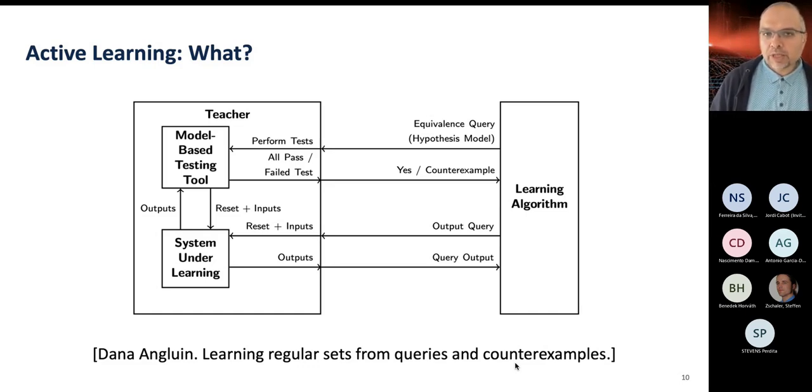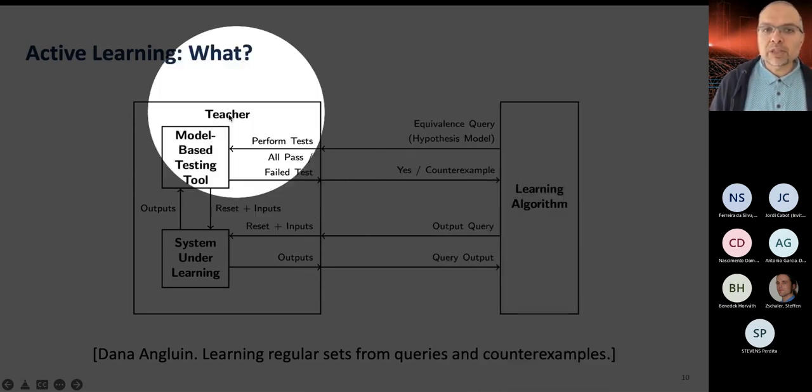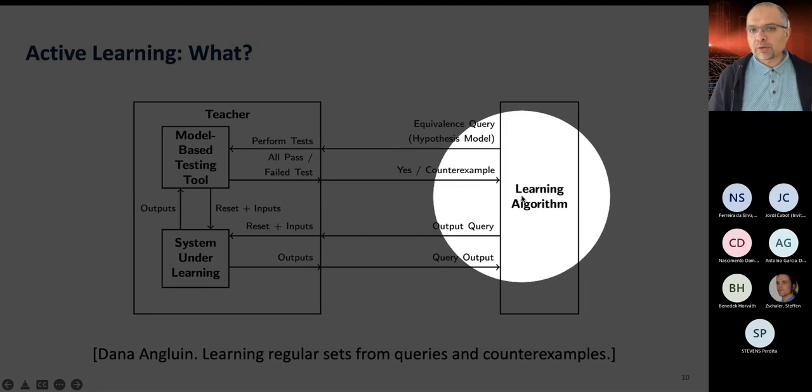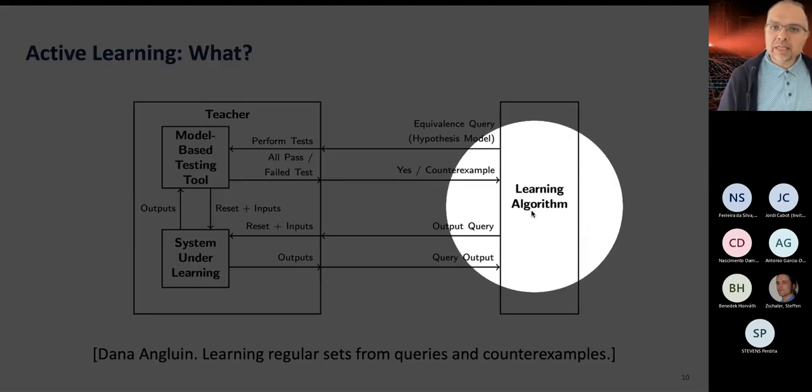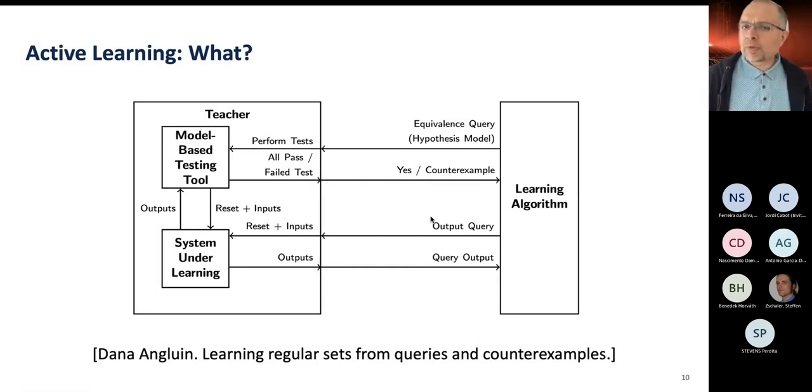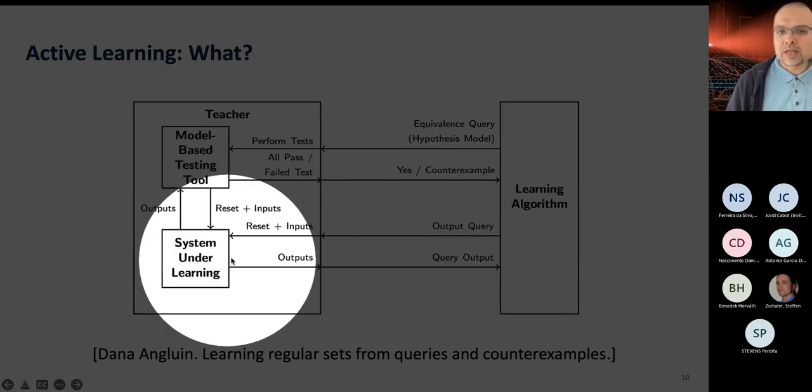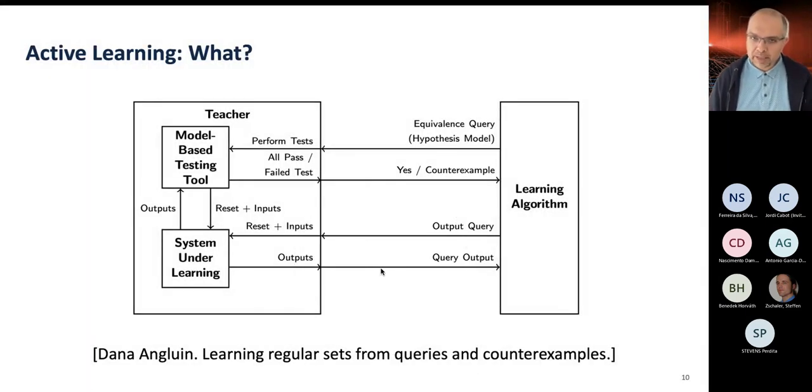How does Dana Angluin's framework look like, paradigm look like? She thinks of a learning algorithm as something that is interacting actively with something called the teacher, and a teacher is something that has the black box inside it but it also has a little bit of intelligence in addition to the black box. Typically you start with a very simple hypothesis which says everything is possible in this black box. Those are typically posed as things called output queries or membership queries. So you ask, is it possible to apply this output to this input and then you observe some output from your system by asking these types of questions from your teacher.